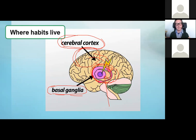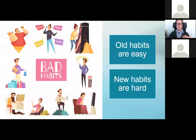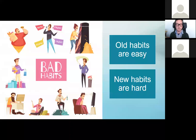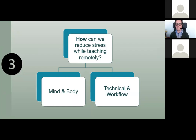We know in our cerebral cortex that it's not logical to get stressed out, but the limbic part of the brain doesn't care. So to make a long story short: old habits are very easy to do, so classroom teaching is easier. New habits are harder — so it makes complete sense that you feel exhausted if you're learning a lot of new things at once. That's what I'd like to talk about now — how can we manage how much we're learning at one time.